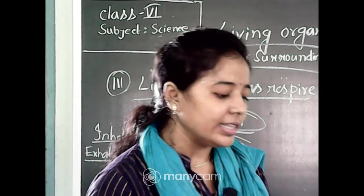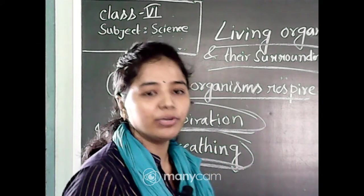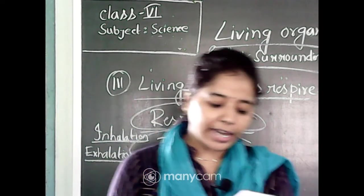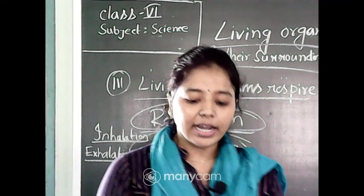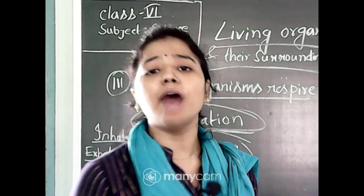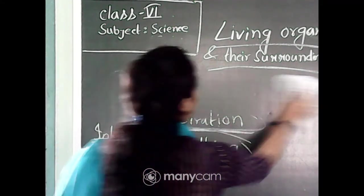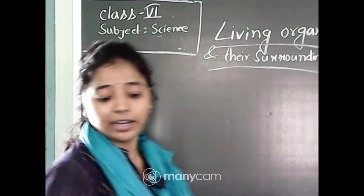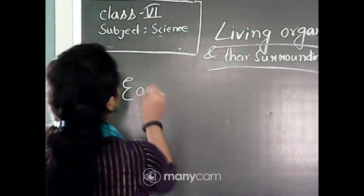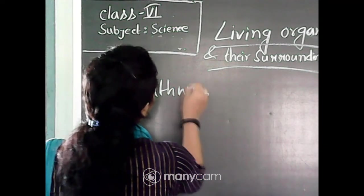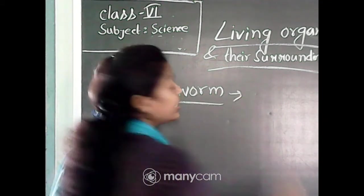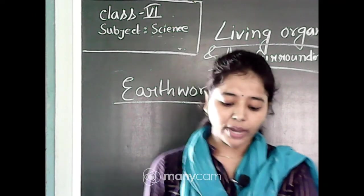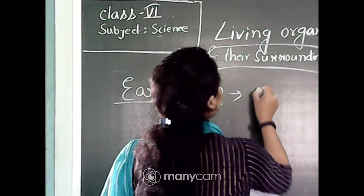I have discussed what respiration and breathing are and we have differentiated between them. Now, there are many organisms. How do they breathe? How does respiration take place in every organism? For example, in earthworms — as they have moist, slimy skin, they can easily respire through their moist skin. Earthworms breathe through their skin.